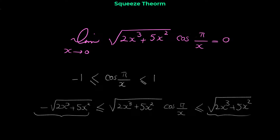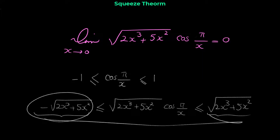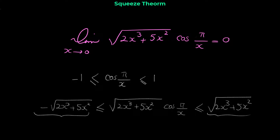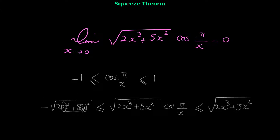Look at the left and right functions — these are much simpler functions than the middle one, and we can find these limits easily with substitution. If we plug in 0 in each of these outer limits: the limit of the left side when x approaches 0 is 0, and the limit of the right side is also 0. So based on the squeeze theorem, the limit of the middle function is also 0.